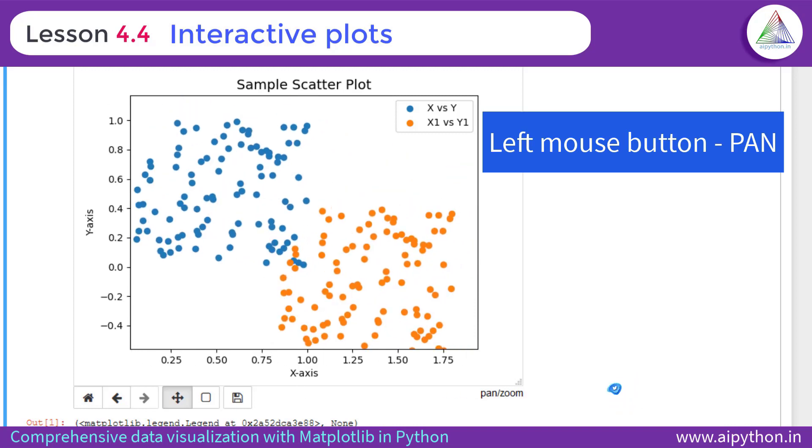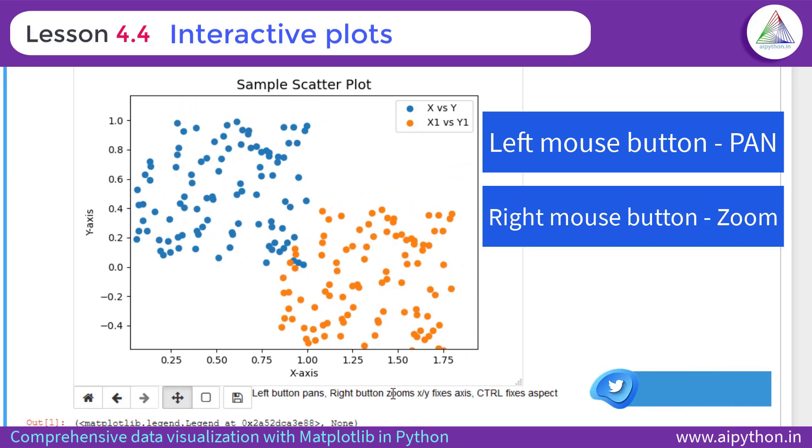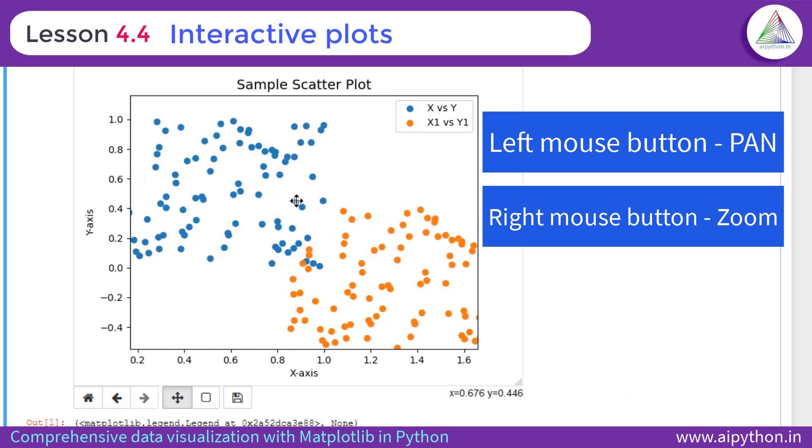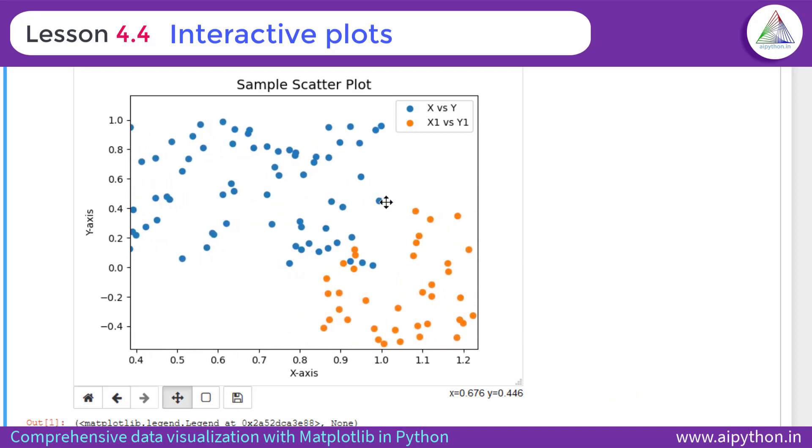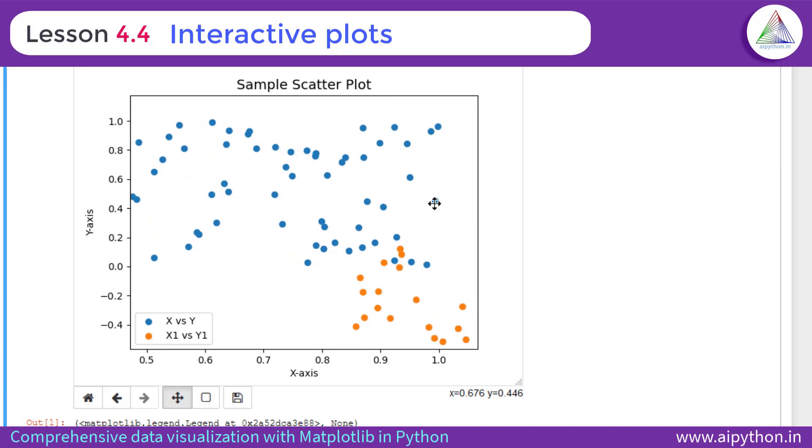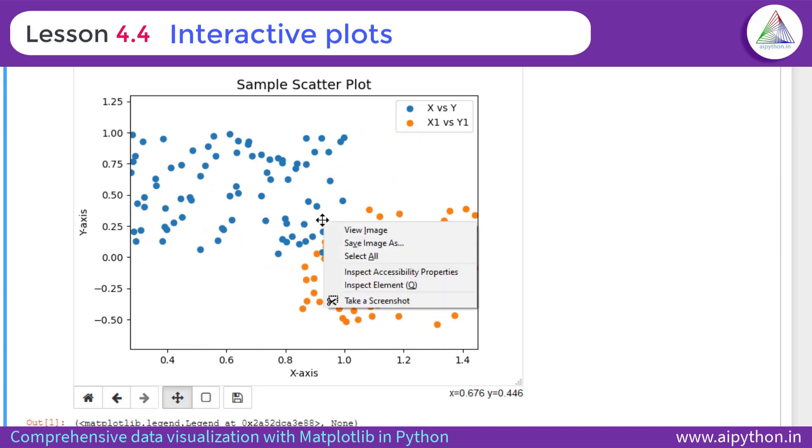Now there is another function which is right button zoom. So when you click on the right mouse button and pan across X axis, you can see here I'm holding right button and panning across this X axis towards right and again left.